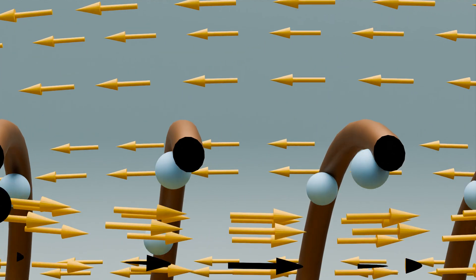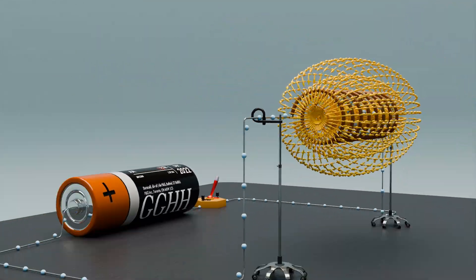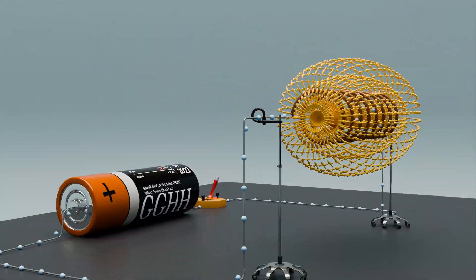Inside the coil, the magnetic field lines are linear and parallel to the axis. Outside the coil, the field lines spread out and loop back to the other end of the coil.